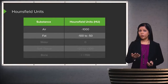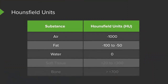The scale then progresses to fat, which measures about negative 50 to negative 100; water, which is about zero; soft tissue, which ranges from about 20 to 300; and then bone, which is the highest anatomical Hounsfield units at greater than about 700. Metal, though not an anatomical structure, will actually have the most Hounsfield units, close to about 1,000.